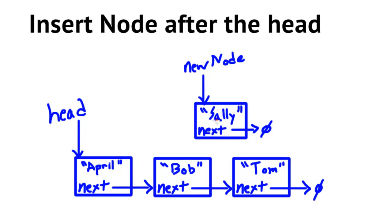In the third case, we've done a traversal and found that the insertion point is not at the head of our list — we no longer have the head pointer to play off of. In this example, we have a new node containing Sally and we're inserting it into a linked list. We can see that Sally should go between the Bob node and the Tom node, but we need to devise a computer algorithm to do that.